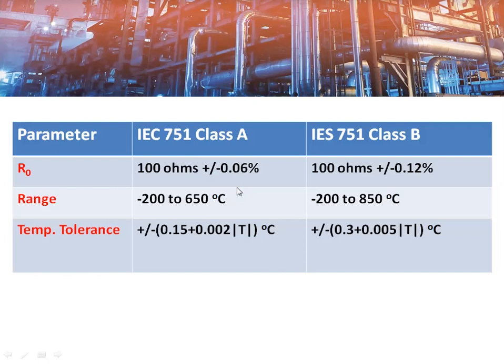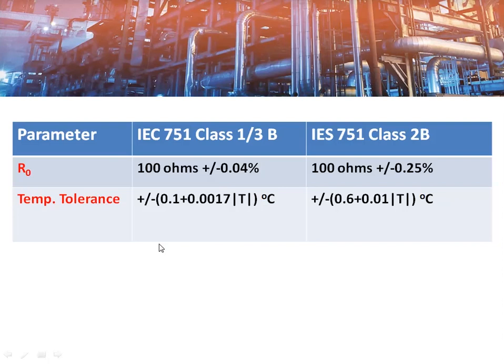Here you can see in this table the Class A and Class B defined as per the IEC standard and their parameters. R0 is the resistance at 0°C — for Class A it is plus or minus 0.06%, and for Class B it is plus or minus 0.12%. These are the temperature ranges for these classes. The temperature tolerance is not fixed — it increases with increase of temperature.